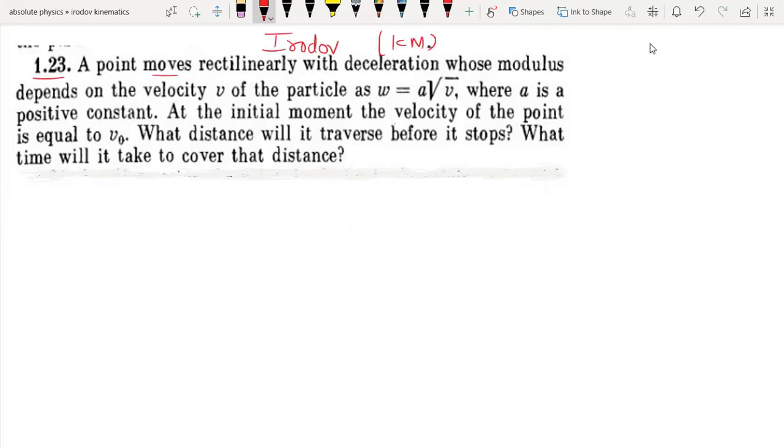A point moves rectilinearly with deceleration whose modulus depends on the velocity of the particle as this, the deceleration modulus, where A is a positive constant, and at the initial moment, the velocity of the point is equal to V0.